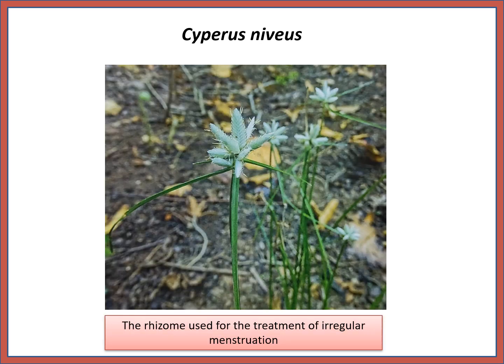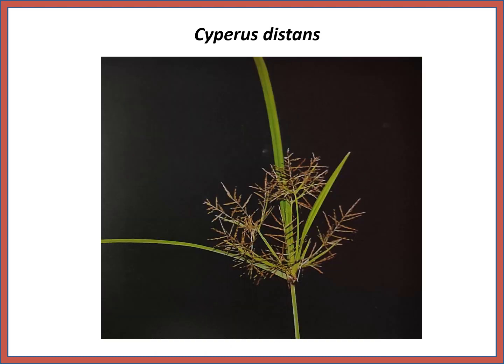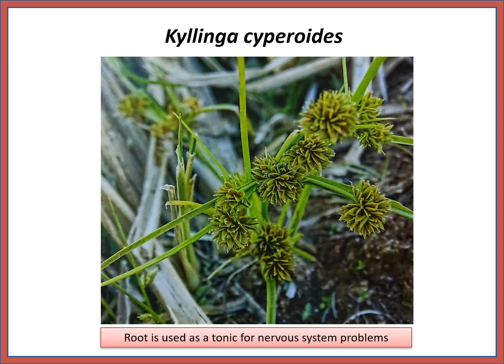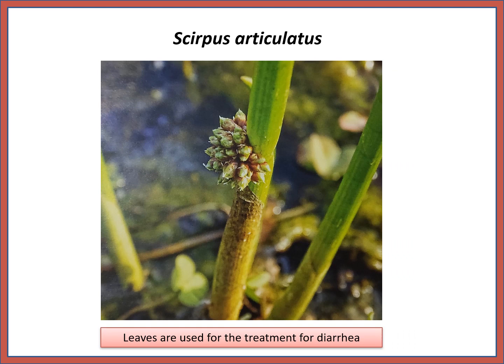Cyperus rotundus root is also used against menstrual irregularities. Cyperus niveus: the rhizome is used for the treatment of irregular menstruation. Cyperus distans and Cyperus cyperoides: root is used as a tonic for nervous system problems. Schoenus articulatus: leaves are used for the treatment of diarrhea, and it also indicates natural mineral or salt leaks.